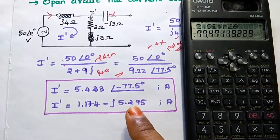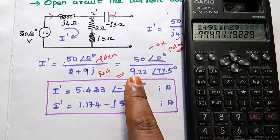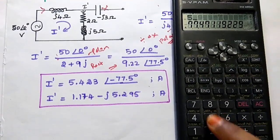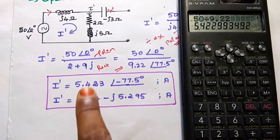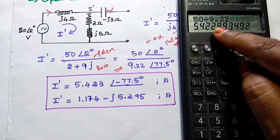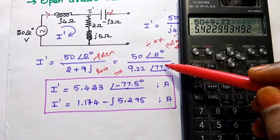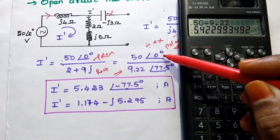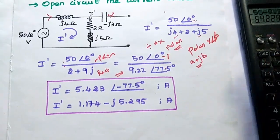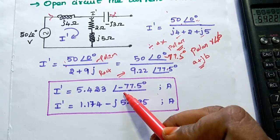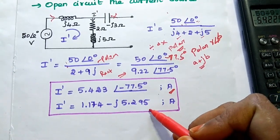In case of division and multiplication we use polar form. Now both numerator and denominator are in polar form. We divide 50 by 9.22 to get 5.423. For the angle, in division we subtract the denominator's angle from the numerator's: 0° minus 77.5° gives minus 77.5°. So I' = 5.423∠-77.5° amperes. This can also be converted into rectangular form.